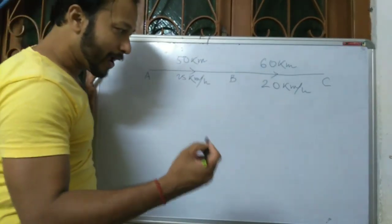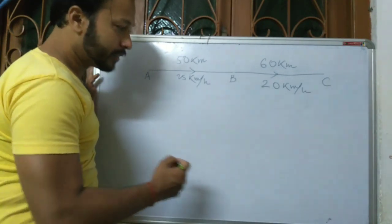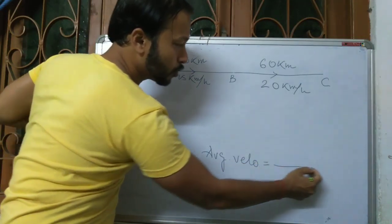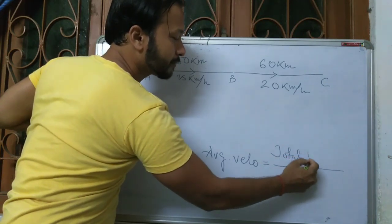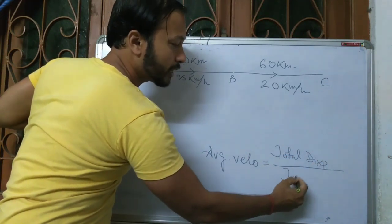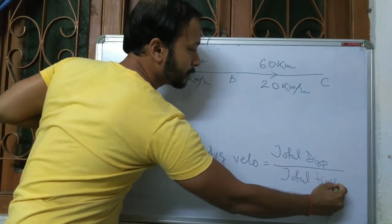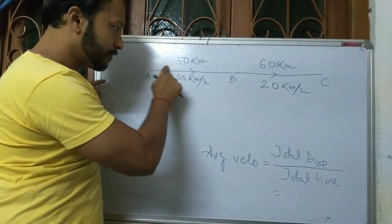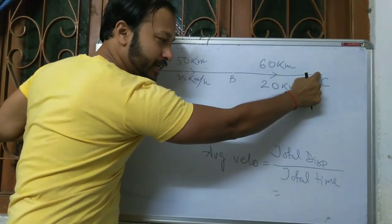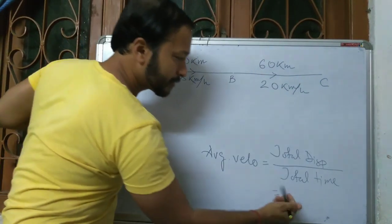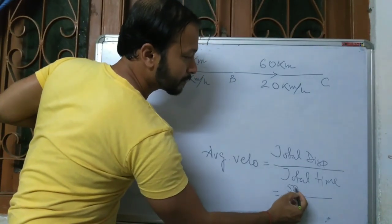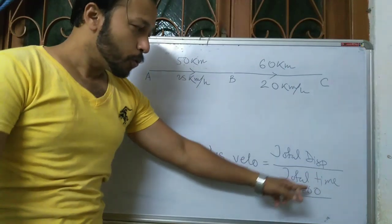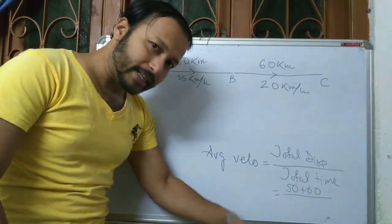As we know, average velocity equals total displacement by total time. So total displacement is 50 plus 60 km. Now for total time — we don't have the time directly, so we will calculate it.